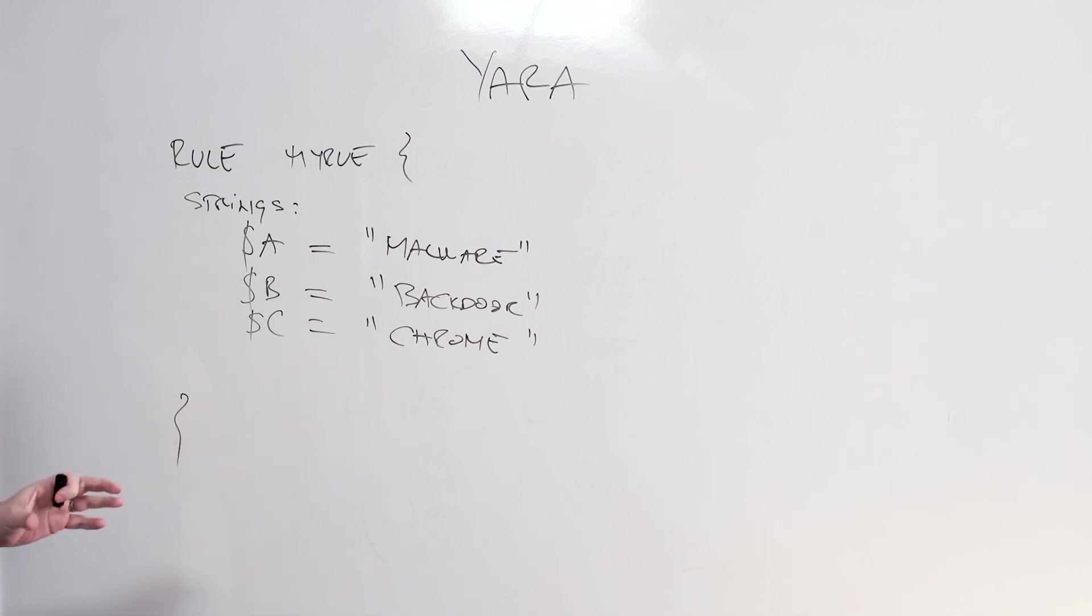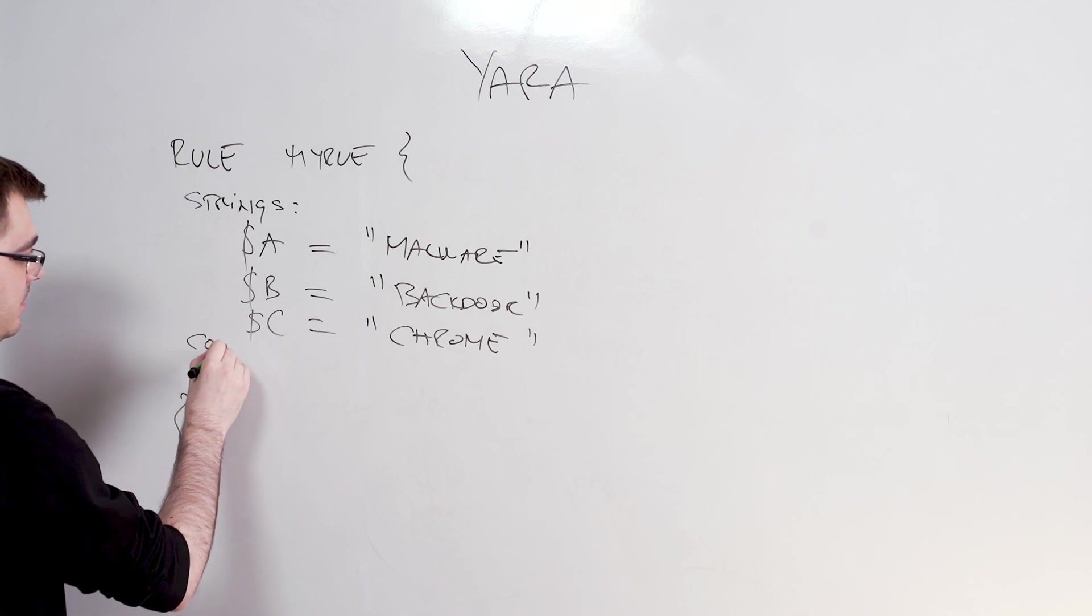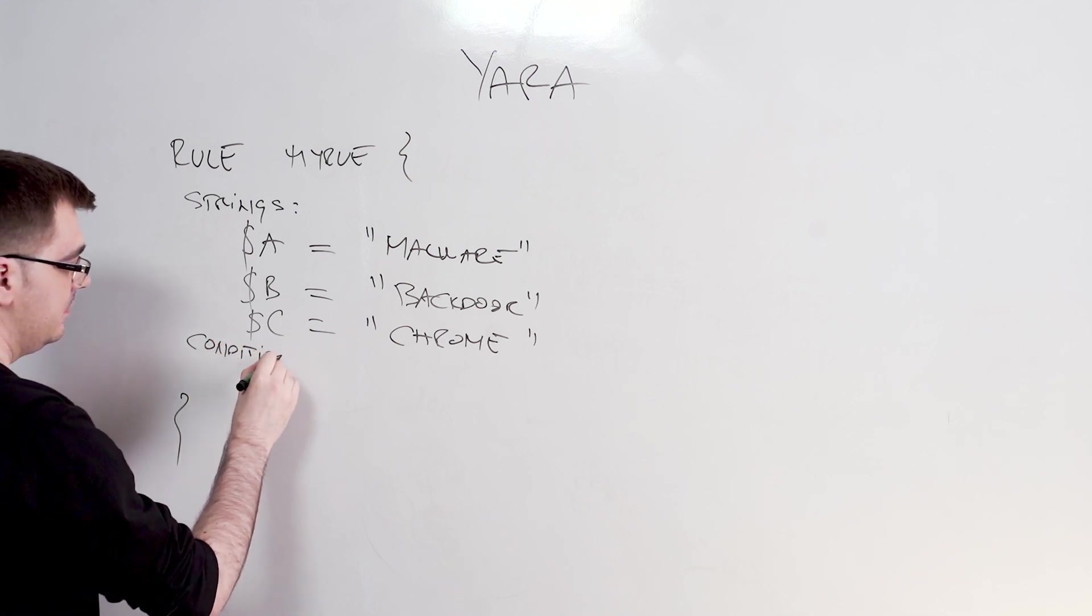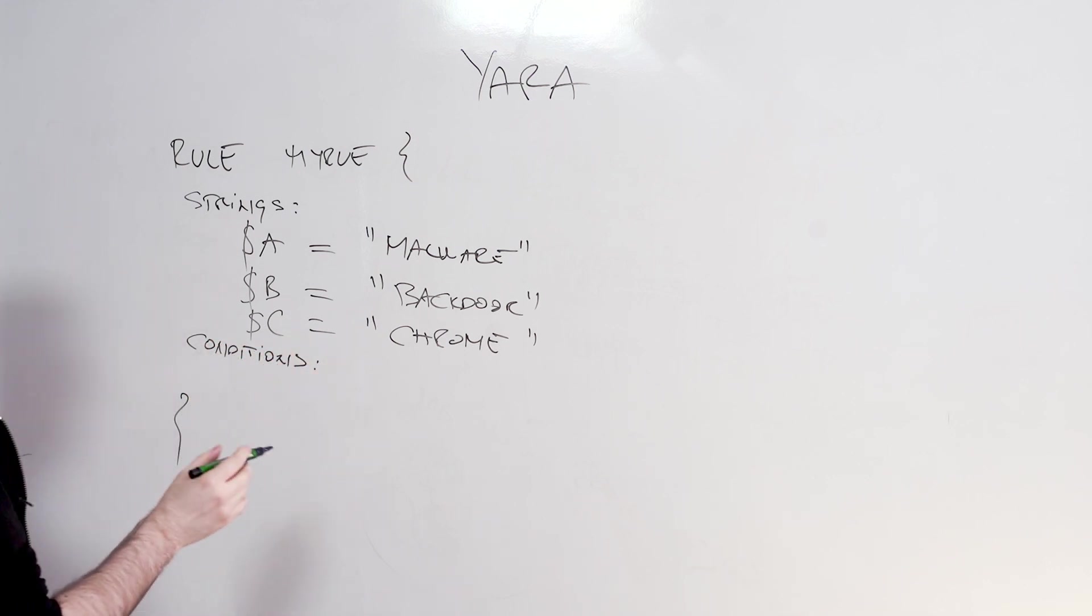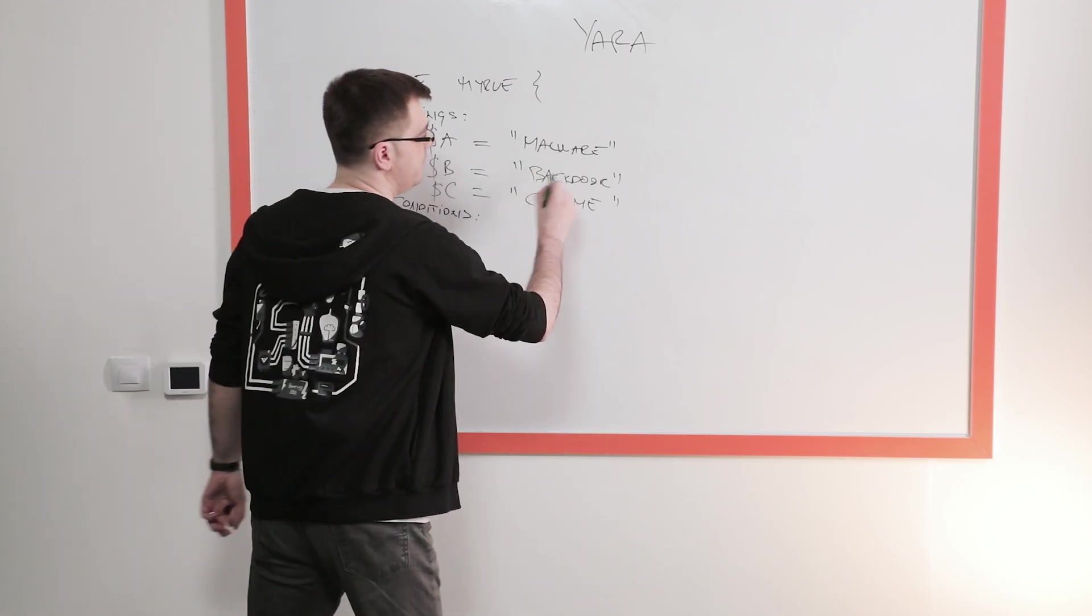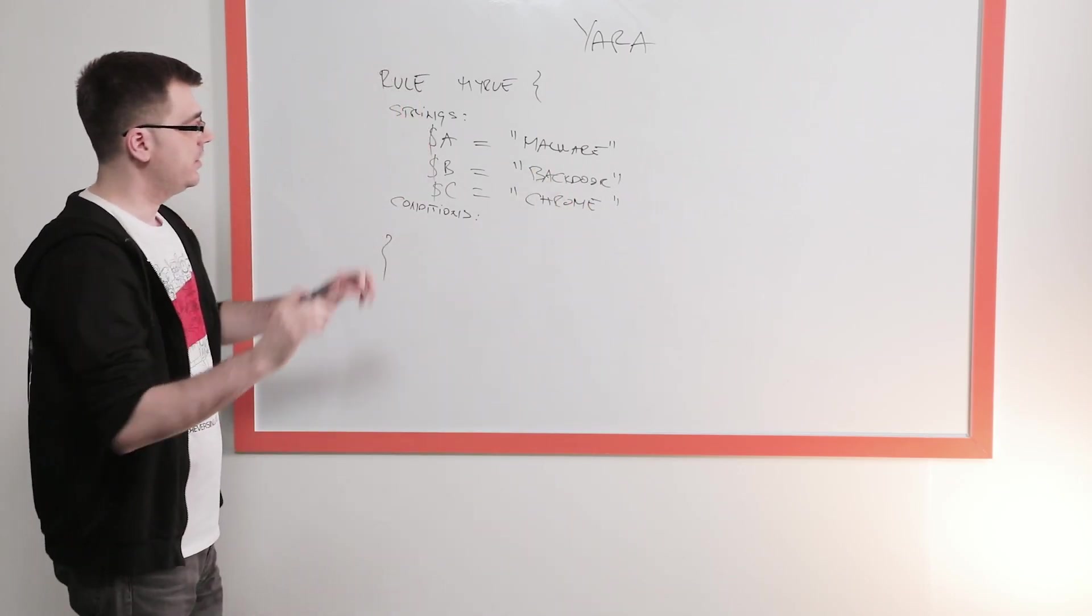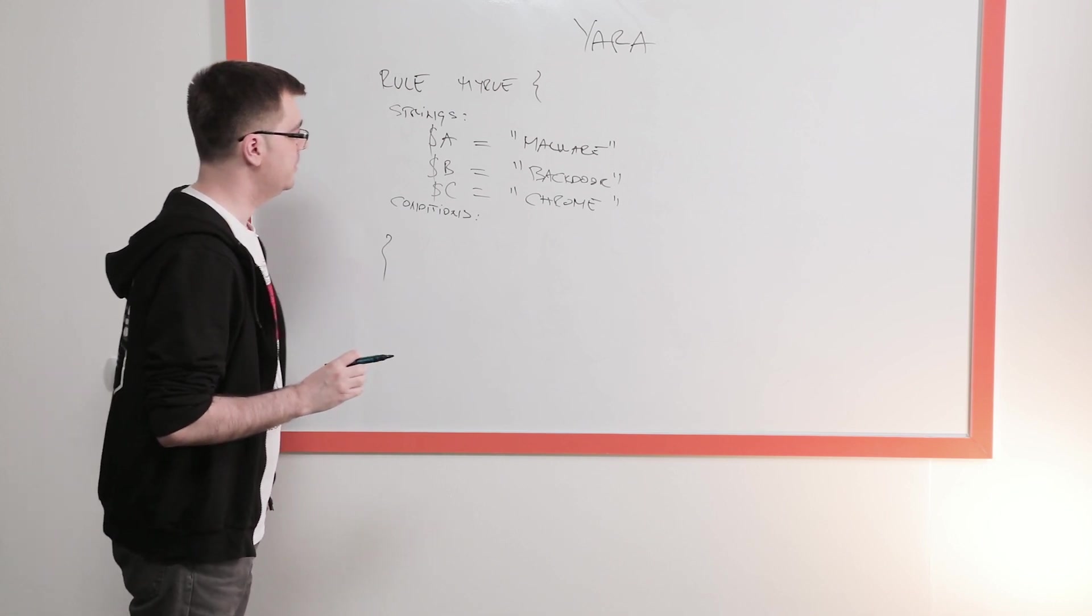And quite literally to match a file, you need to create conditions which trigger this match. And the condition would be something like this. Let's say we're trying to find just the malicious files. Let's say A and B together say that this is a malware backdoor and that's going to trigger the Yara rule which detects something as a backdoor.